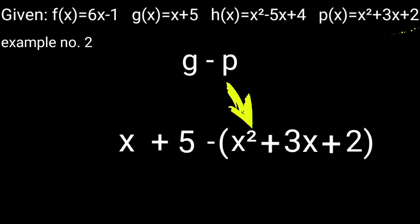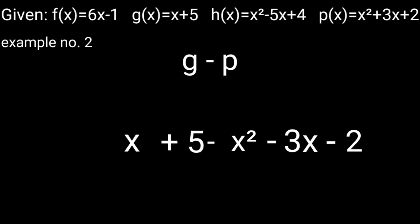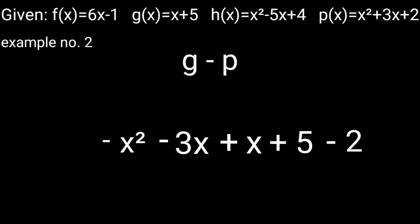Example 2: g − p — substitute g with x + 5 and p with x² + 3x + 2. The equation is x + 5 − (x² + 3x + 2). Apply the distributive property: x + 5 − x² − 3x − 2. Combine like terms and solve. The final answer is −x² − 2x + 3. It is a quadratic expression, so order is from the highest exponent down to constant.